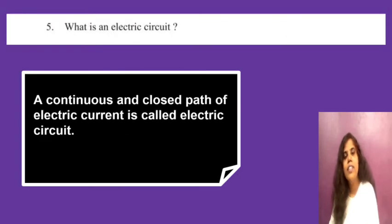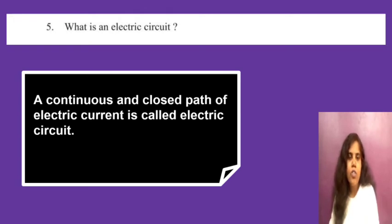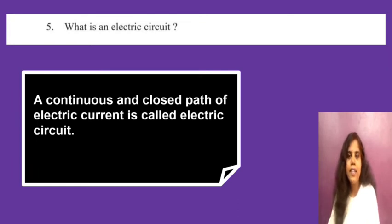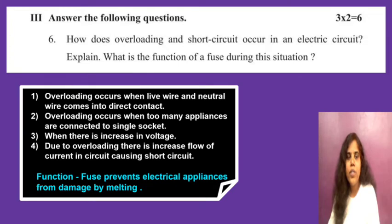Fifth question: what is an electric circuit? A simple definition you should write is: a continuous and closed path of electric current is called an electric circuit.